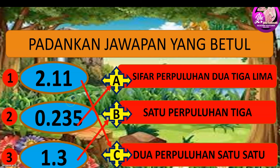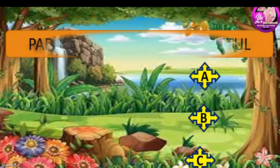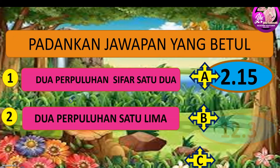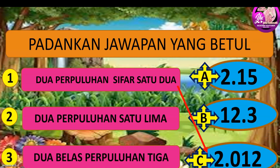Baiklah, kita teruskan soalan seterusnya. Lihat dan perhatikan betul-betul. Jawapan nombor satu kita padankan dengan C. Nombor dua, dua perpuluhan satu lima, kita padankan dengan A. Nombor tiga, dua belas perpuluhan tiga, kita padankan dengan B.